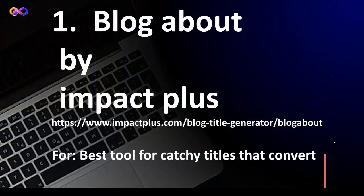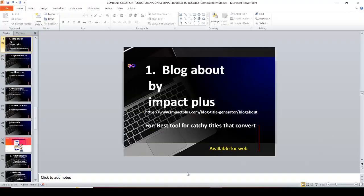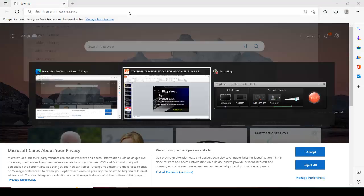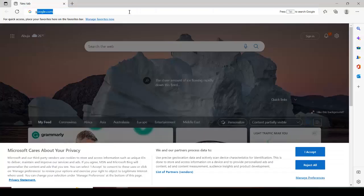Number one amazing tool for content creation is Blog About by Impact Plus. Let's go to Google now. This tool will help you get catchy titles. As long as you know the kind of content you want to create, this tool will help. So go to Google and type 'Blog About by Impact Plus.'